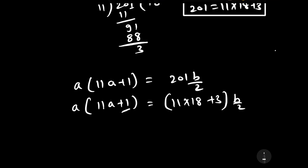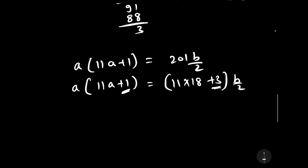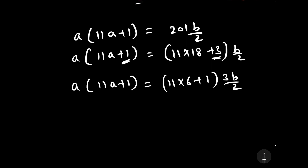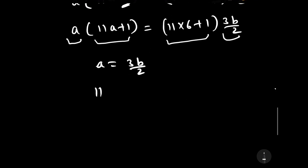Observing that one side has plus 1 and the other has plus 3, to make it plus 1 we take out common factor 3: so it becomes 11 into 6 plus 1, times 3b by 2, which equals a into 11a plus 1. Comparing: a equals 3b by 2, and 11a plus 1 equals 11 into 6 plus 1. We do not compare a with 11 into 6 plus 1 because a is a unit digit number and that would give a two-digit result.